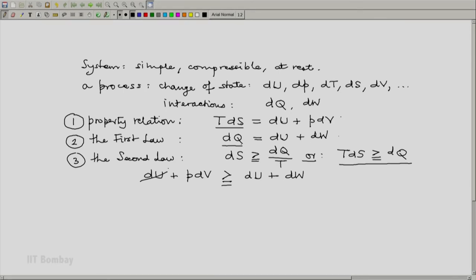Now let us cancel out dU from either side. Transpose terms so that we get PdV on the right-hand side, and we get finally dW minus PdV is less than or equal to 0. What does this mean? PdV for our simple compressible system is the two-way mode of work. And that is all we have. It is a simple system, so only one two-way mode of work.